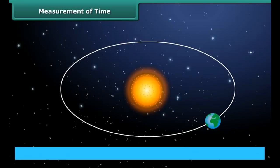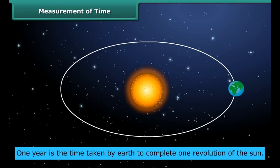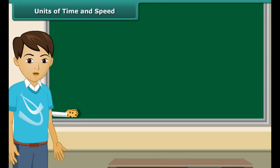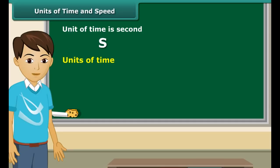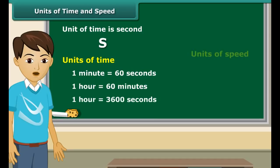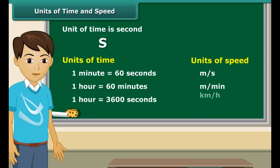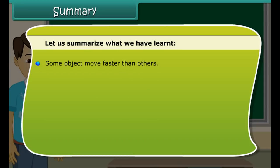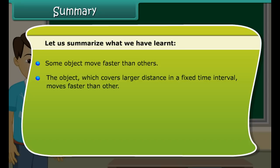Many events in nature repeat themselves after definite intervals of time. For example, the sun rises every day in the morning. The time between one sunrise and the next is called a day. A month is measured from one full moon to the next, and one year is the time taken by Earth to complete one revolution of the sun. To measure intervals shorter than a day, we use clocks and watches. The basic unit of time is the second, symbolized as S. Larger units are minutes and hours: one minute equals 60 seconds and 60 minutes equal one hour. The basic unit of speed is meter per second, but it can also be expressed in meter per minute or kilometer per hour.